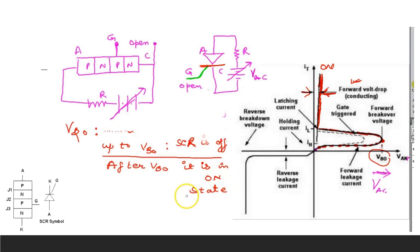Here you can see the anode and cathode connected through a resistor with a varying voltage. The positive terminal is connected to the anode and the negative terminal to the cathode, with the gate open. In this form, the circuit is similar to the PNPN diode. But when we close the gate circuit so that current flows through the gate, the function of this current can be controlled as it moves from anode to cathode. The IV characteristics are the same as discussed for PNPN diode, and here is the symbol of the SCR showing the gate terminal.